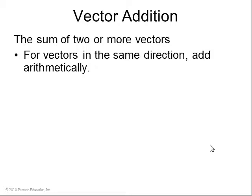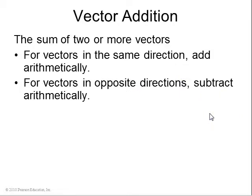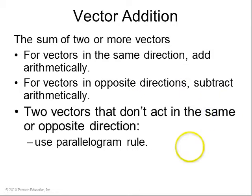So the sum of two or more vectors: if the vectors are in the same direction, you can just add them arithmetically. If the vectors are in opposite directions, you can subtract them.